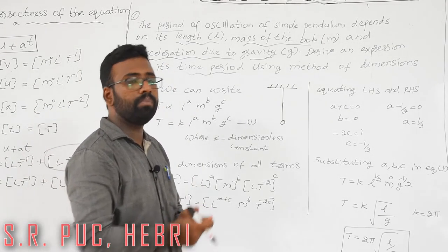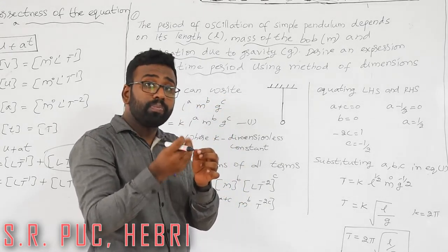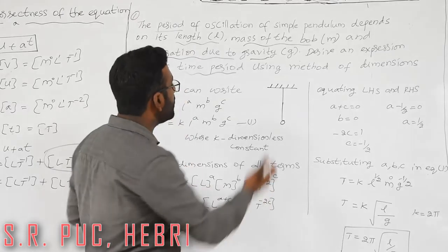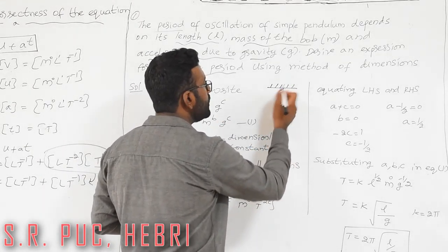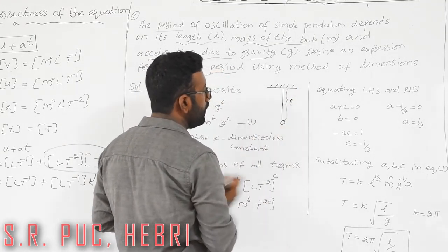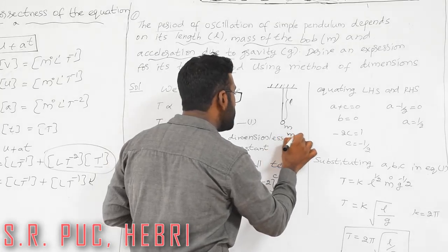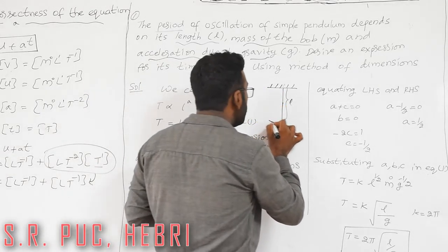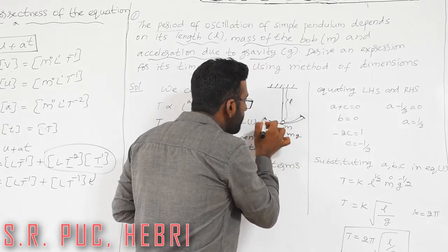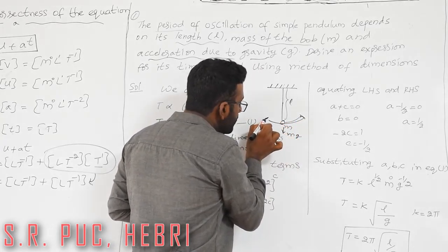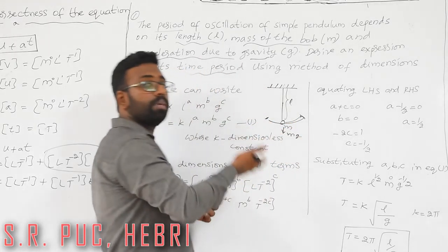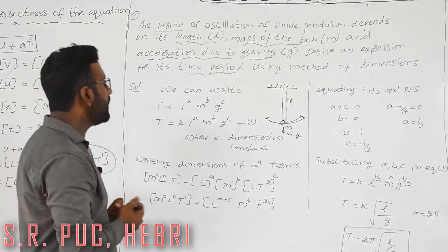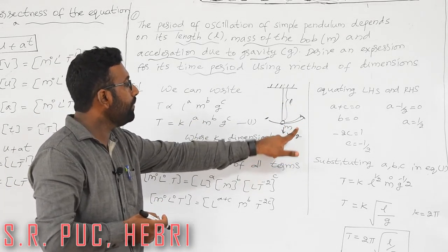A simple pendulum is a mass (bob) tied to a thread. It has length l, mass m, and weight mg acting downward. Time period is the time taken to complete one oscillation — the pendulum swings to one side and returns to the starting point. We need to find an equation for this time period in terms of l, m, and g.